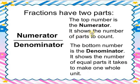The top number is the numerator — it shows the number of parts to count. The bottom number is the denominator — it shows the number of equal parts it takes to make one whole unit. So the whole part is called the denominator, and a specific shaded part is called the numerator.